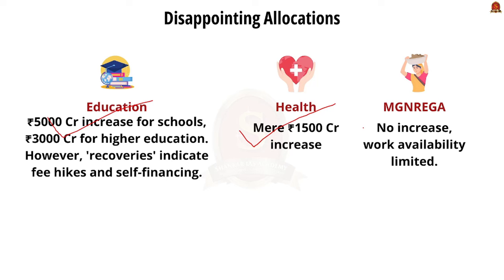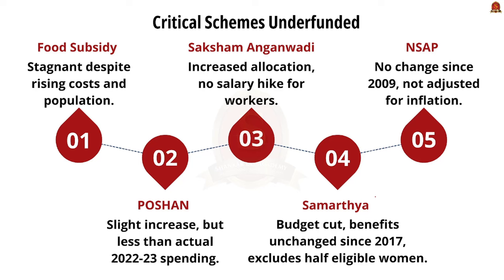With respect to MGNREGA, the allocation remains the same as per last year's revised estimates, limiting the availability of work based on budget. Regarding food subsidy, despite needing to cover current population levels and rising costs, there is hardly any increase. The Poshan scheme, which focuses on reducing malnutrition, stunting, and anemia among children, pregnant women, and lactating mothers through nutrition intervention and awareness, has had its budget slightly increased to 12,467 crore — still less than actual expenditure in 2022-23. The Saksham Anganwadi scheme — aimed at strengthening Anganwadi centres providing nutrition, healthcare, and early childhood education — saw allocation increase to 21,000 crore from 20,554 crore.